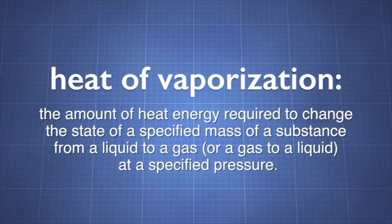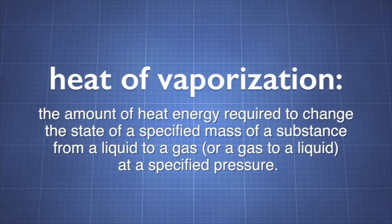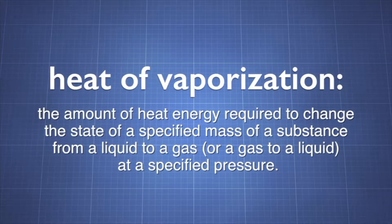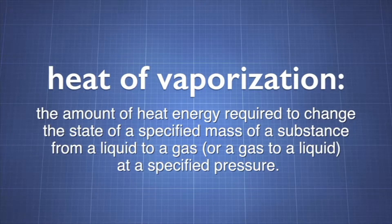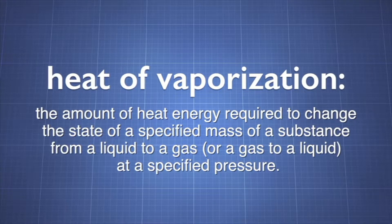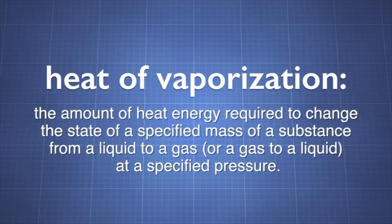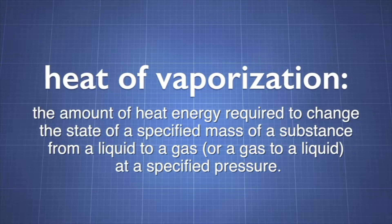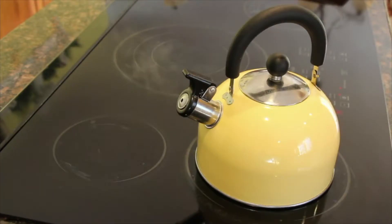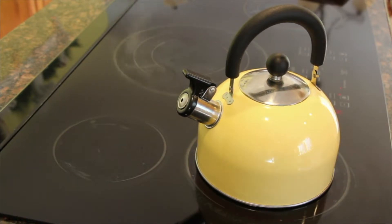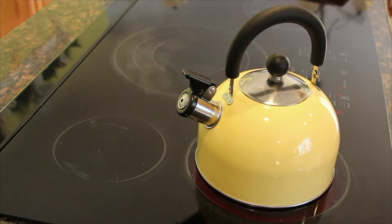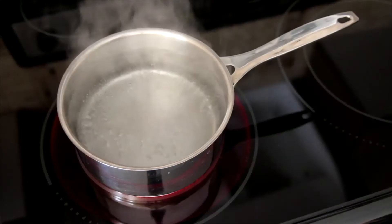The heat of vaporization is the amount of heat energy required to change the state of a specified mass of a substance from a liquid to a gas, or a gas to a liquid, at a specified pressure. The specific heat of vaporization is the amount of heat added to vaporize one gram of a substance at standard temperature and pressure.